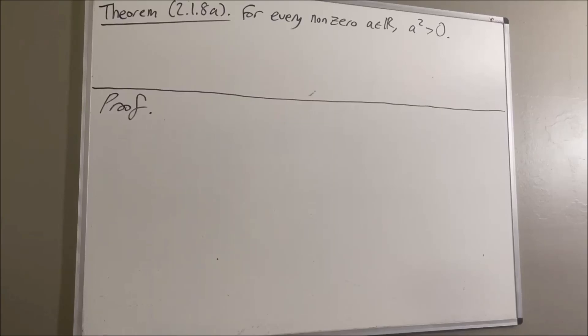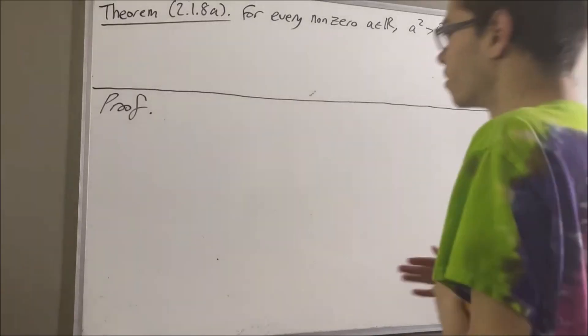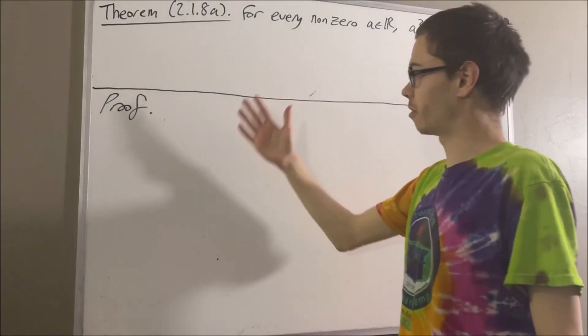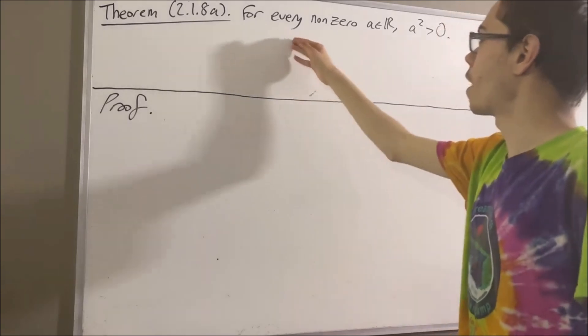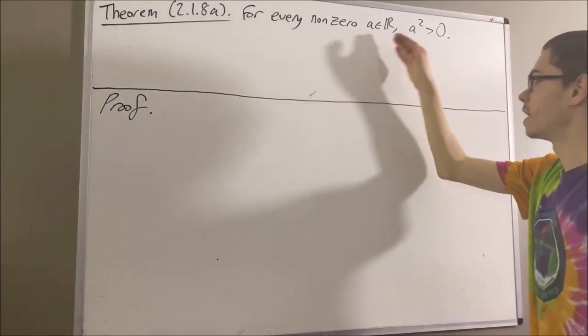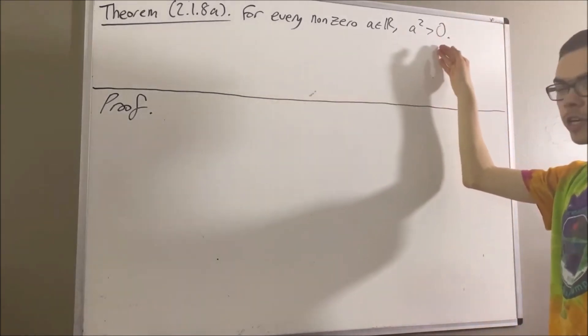Hello! In this video we are going to prove the following theorem: for every non-zero real number a, a squared is greater than zero.